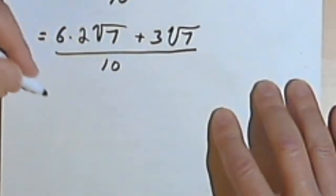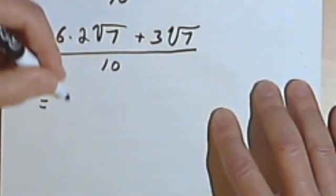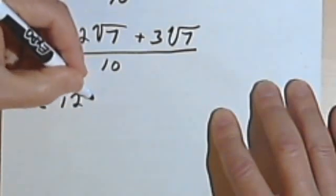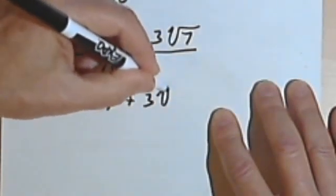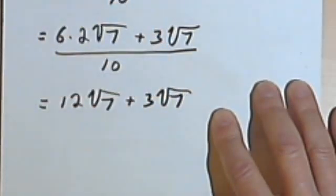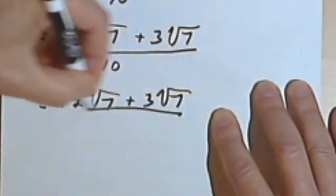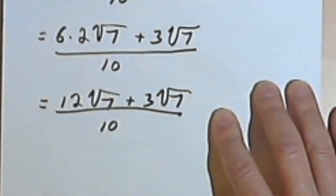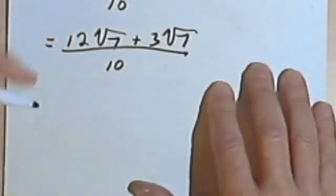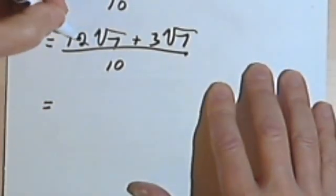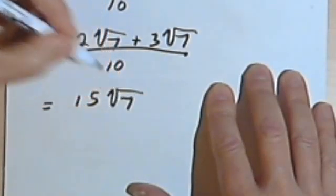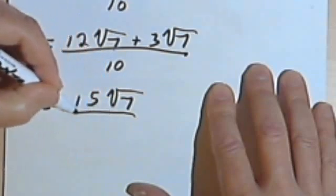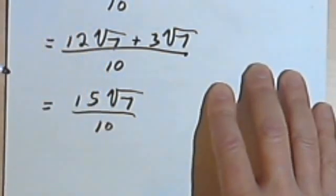I'll do the multiplication here. So 6 times 2 is 12, 12 times the square root of 7, plus 3 times the square root of 7 over 10. And let's see, 12 plus 3 is 15,